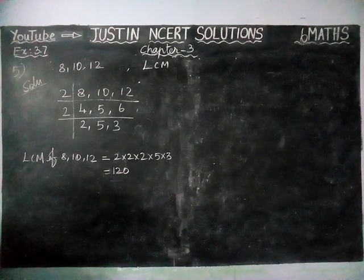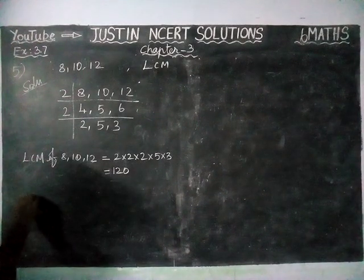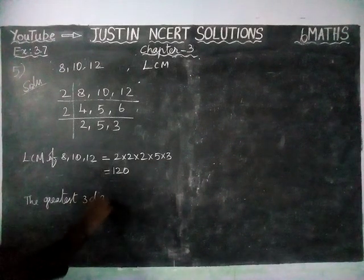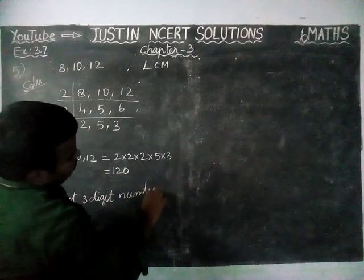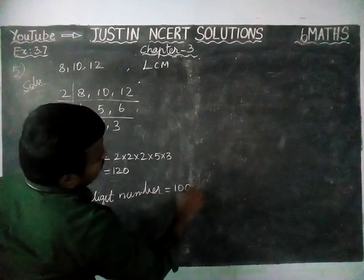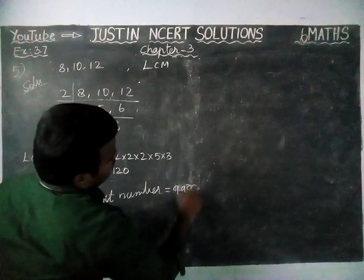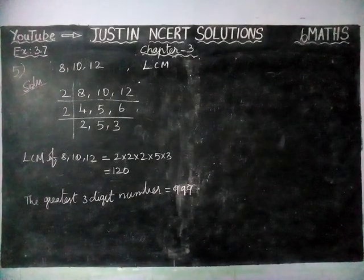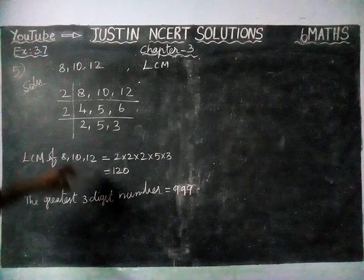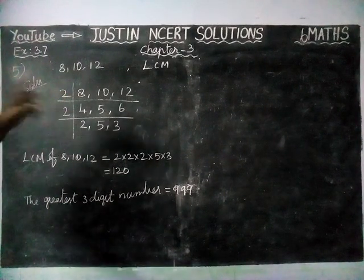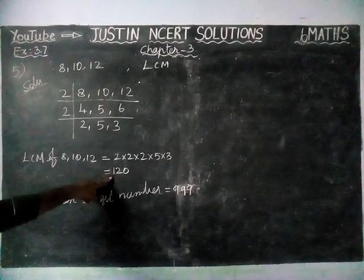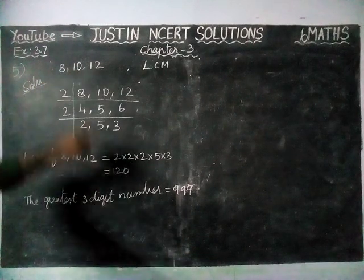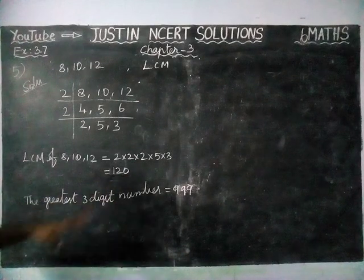Now, we have to find the greatest three-digit number. The greatest three-digit number is 999. We have to find the greatest three-digit number which is exactly divisible by 8, 10 and 12. So, that number should be a multiple of 120, because the number is exactly divisible by 8, 10 and 12 — that means it will be a multiple of 120.